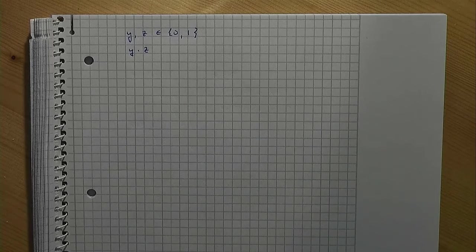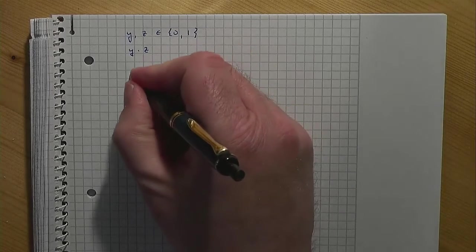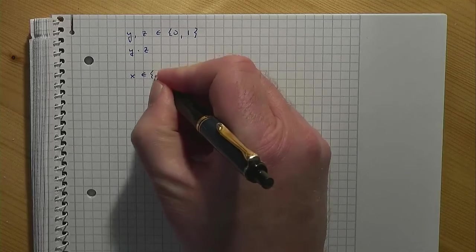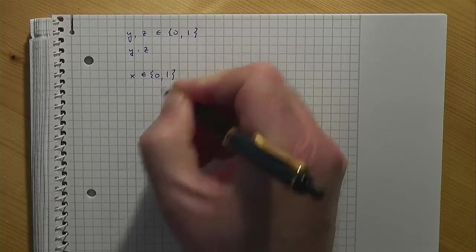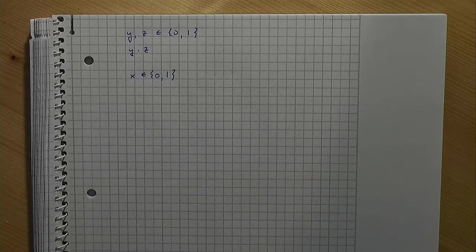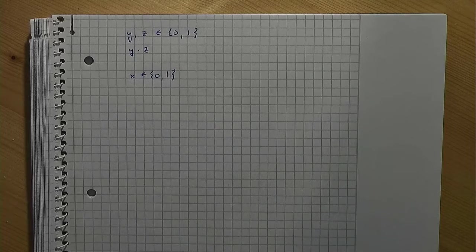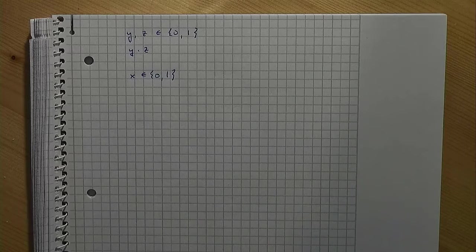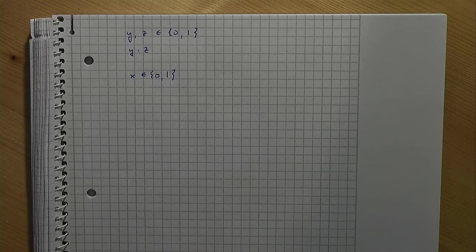Obviously, the result is either 0 or 1. Hence, we can introduce a new binary variable, say x. The expression y times z can be replaced by x if we can somehow achieve that the value of x equals y times z.